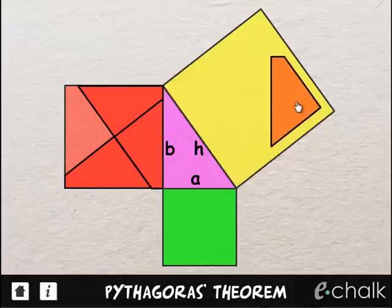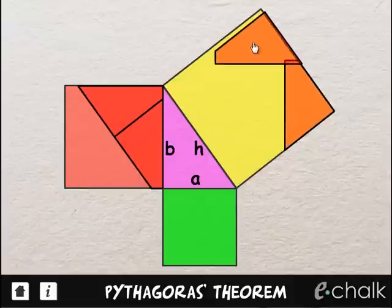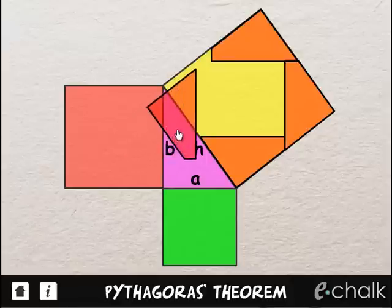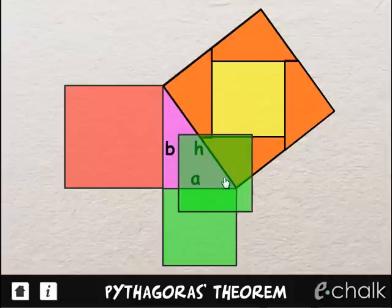We can take this piece and place it there, this piece place it there, this piece and place it here, and that one there. And you'll always be left with the square which fits the square of side A perfectly.